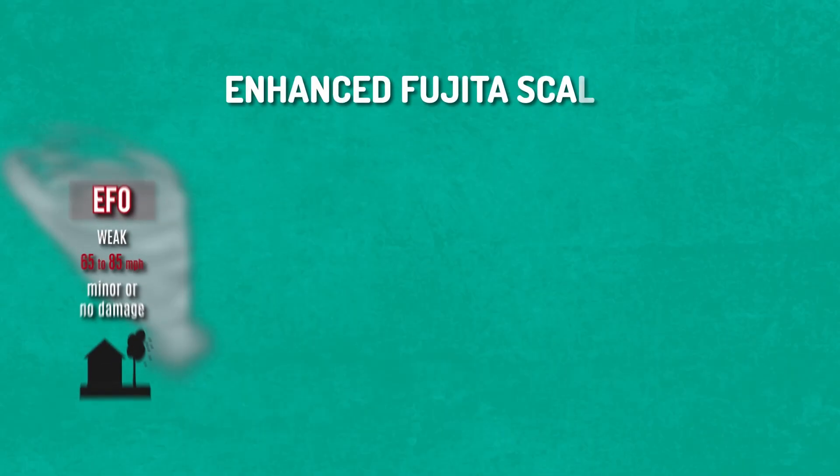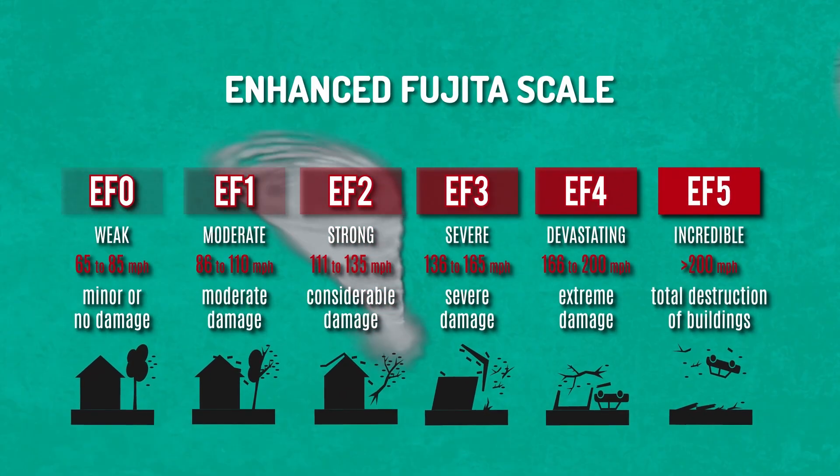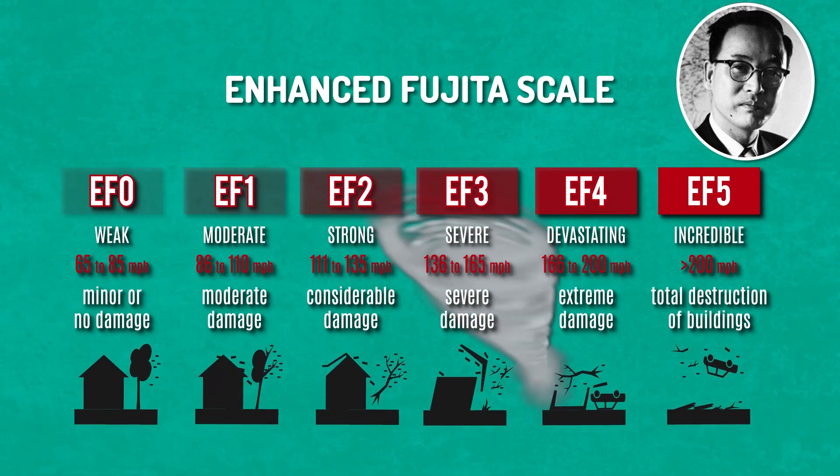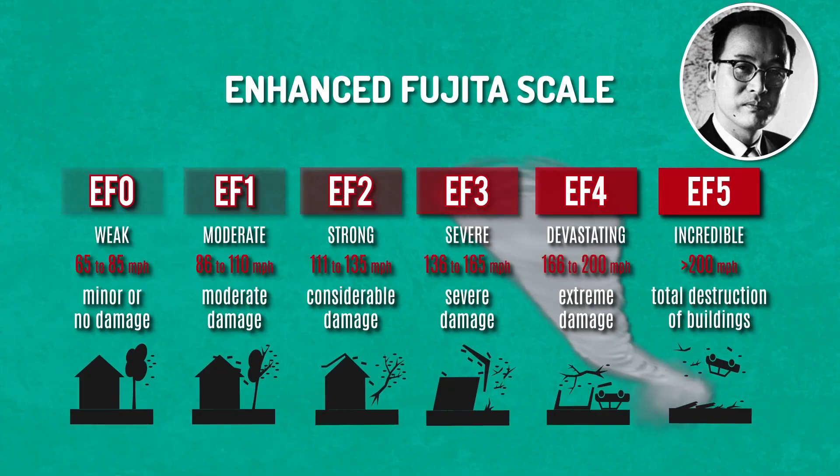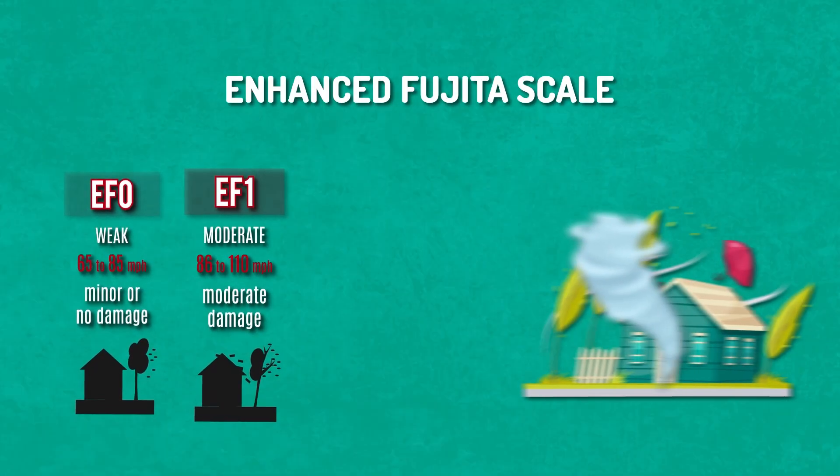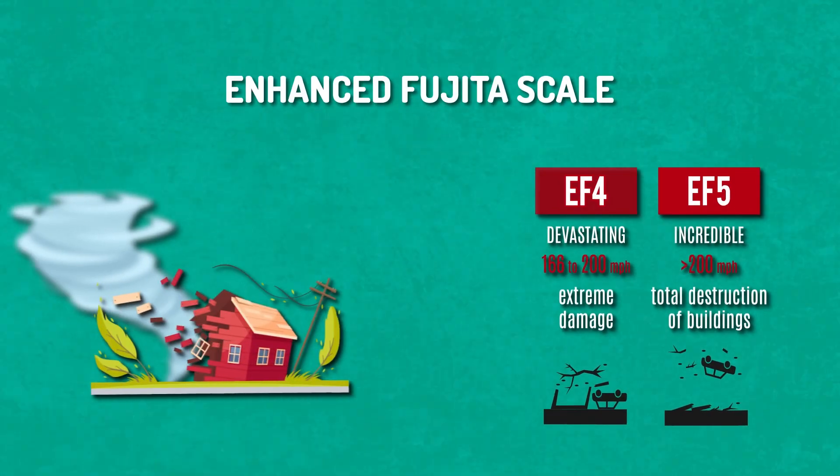The Enhanced Fujita Scale is a system used to evaluate the intensity of tornadoes based on the damage caused. Named after meteorologist Ted Fujita, the scale ranks tornadoes from a low of F0 to the most extreme being an F5. An F0 or an F1 tornado describes damage as light or moderate, while F4 and F5 tornadoes are classified as devastating and incredible. And that's for good reason.